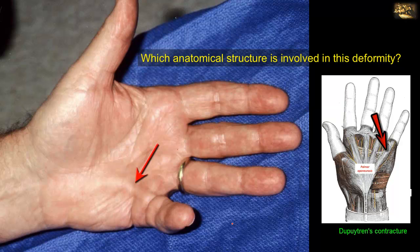Shortening of this slip results in contracture of the metacarpophalangeal joint. The distal end of the palmar aponeurosis divides at the roots of the fingers into four bands passing to the fingers, each fused with a fibrous flexor sheath. Dupuytren's contracture usually affects the band passing to the fourth or fifth digit, or both — as seen here with the band to the fifth digit.